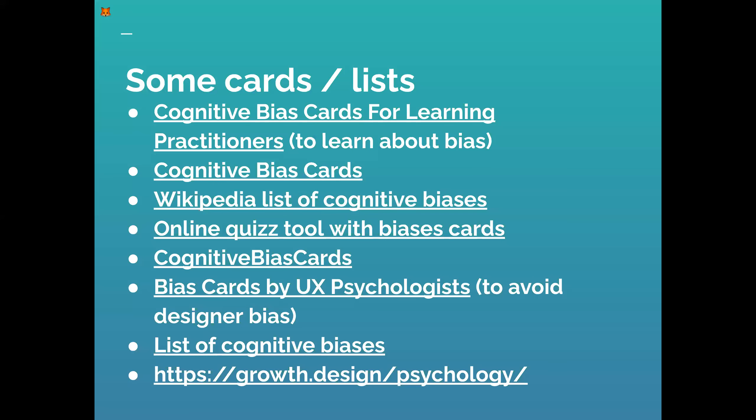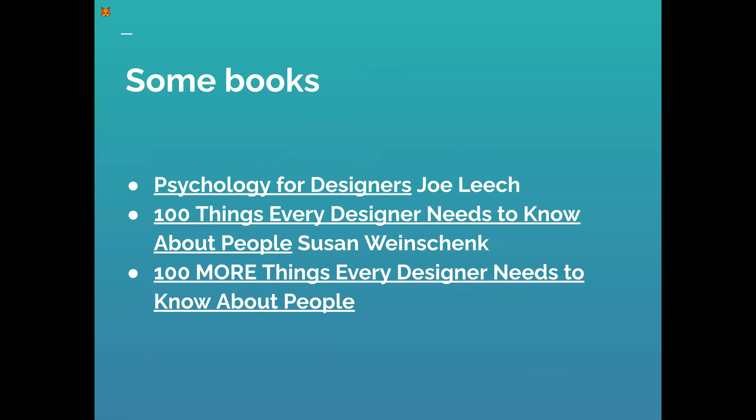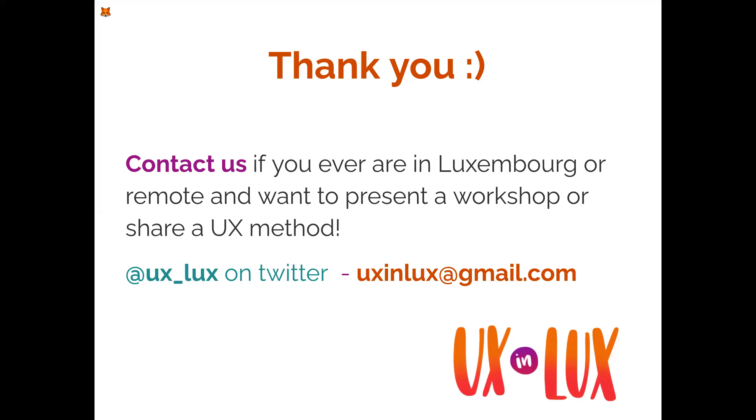We'll give you the presentation with all the links so you can go deeper. There's a lot of documentation on the topic. Psychology for Designers by Joe Leech is free or available if you email him as a student. Susan Weinschenk has two books — '100 Things' and '100 More Things' — two different books, not just a second edition. Both are psychology theory to help you go further into this topic.